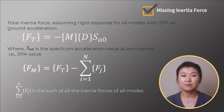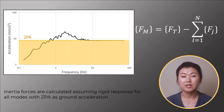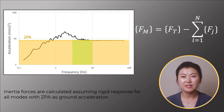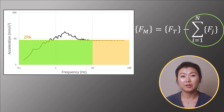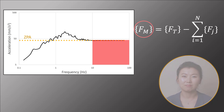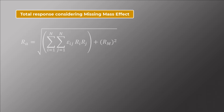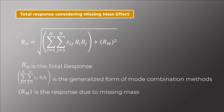To explain this method visually: first, we assume ZPA as the spectral value for all existing modes, including the neglected ones, and use the area under the ZPA line to visually represent the total inertia force. Then we find the summation of the inertia force for all obtained modes, marked in green. Subtracting the green area from the yellow area gives us the inertia force for the missing mass. With the missing inertia force and the stiffness matrix of the structure, we can calculate the missing mass deformation response. Lastly, the missing mass response is combined with the previously calculated response by SRSS, where the first term is the generalized mode combination method and the second term accounts for the missing mass response.